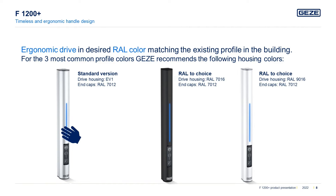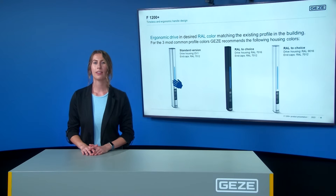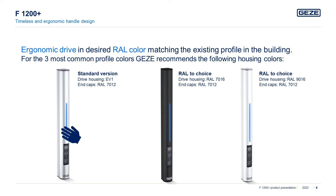The F1200 Plus is particularly recognizable by its timeless and ergonomic handle design, and thus fits very well to the window. Since the drive also functions as a modern operating element for ventilation windows, the shape is ergonomically designed to fit well into the hand. The window can be comfortably brought into the turn position. The F1200 Plus can be adapted to individual customer requirements or window profile colors, and can be offered in corresponding RAL colors via the RAL-to-choice version.